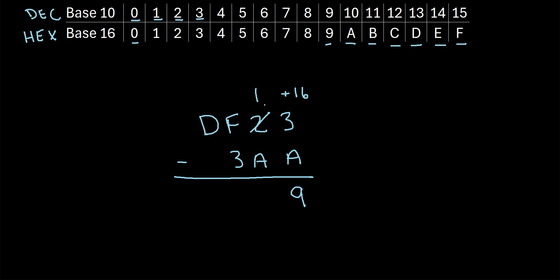Moving on to the next column, we now have 1 minus A. Remember, A is equal to 10, so we can't do 1 minus 10, so we have to borrow from the next column. We cross out the F and make it 1 less, which is E in the hex system. So this F becomes an E, and we add 16 to this 1. So now we have 1 plus 16, that's 17. So we have 17 minus A, or 17 minus 10, which is 7.